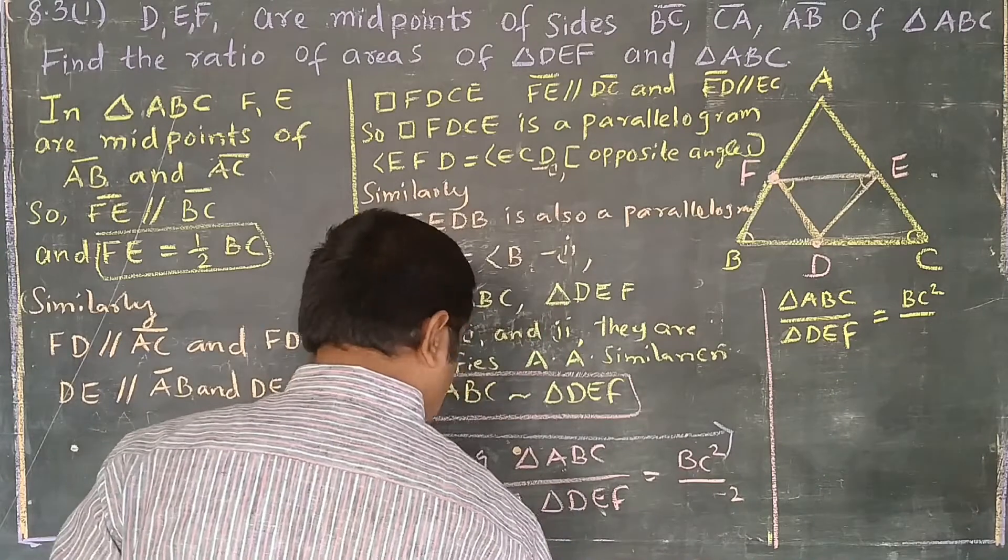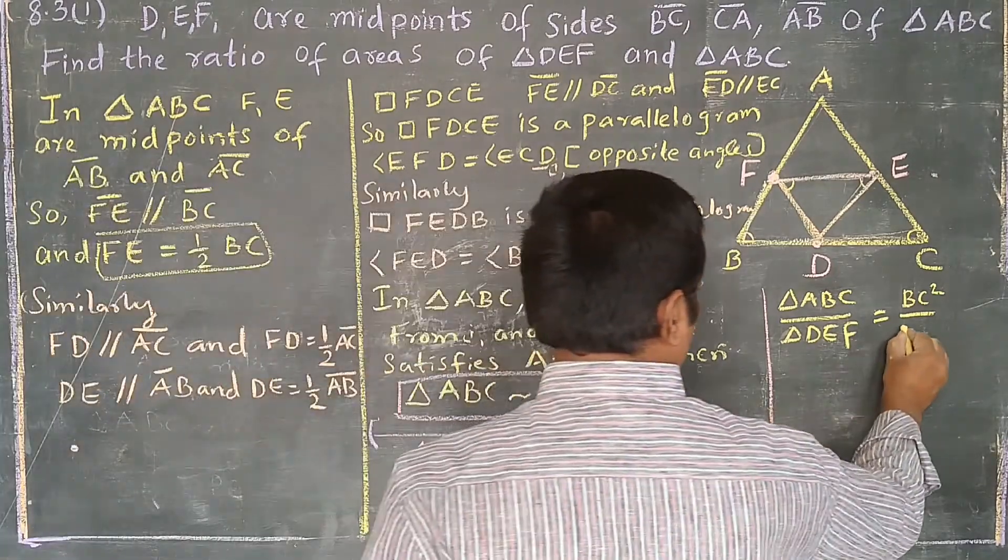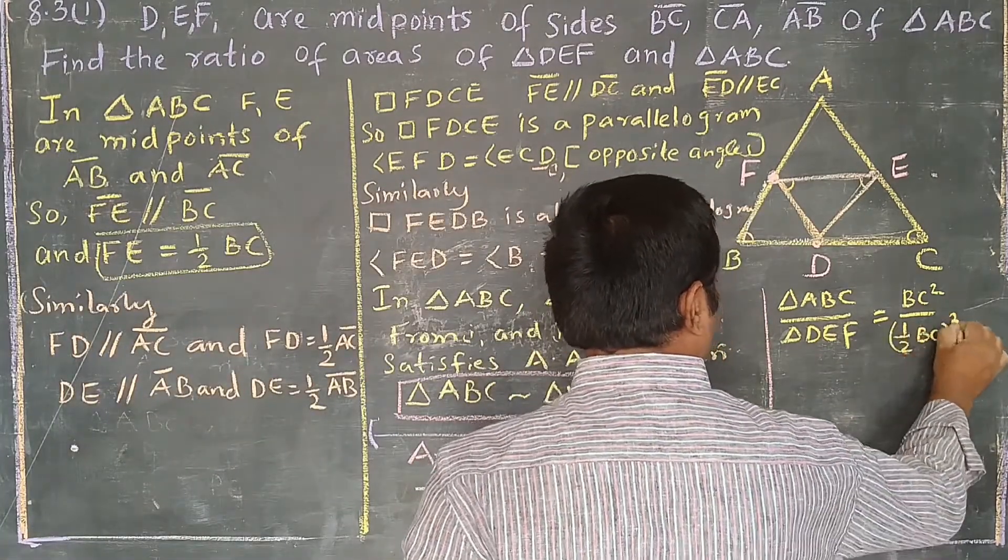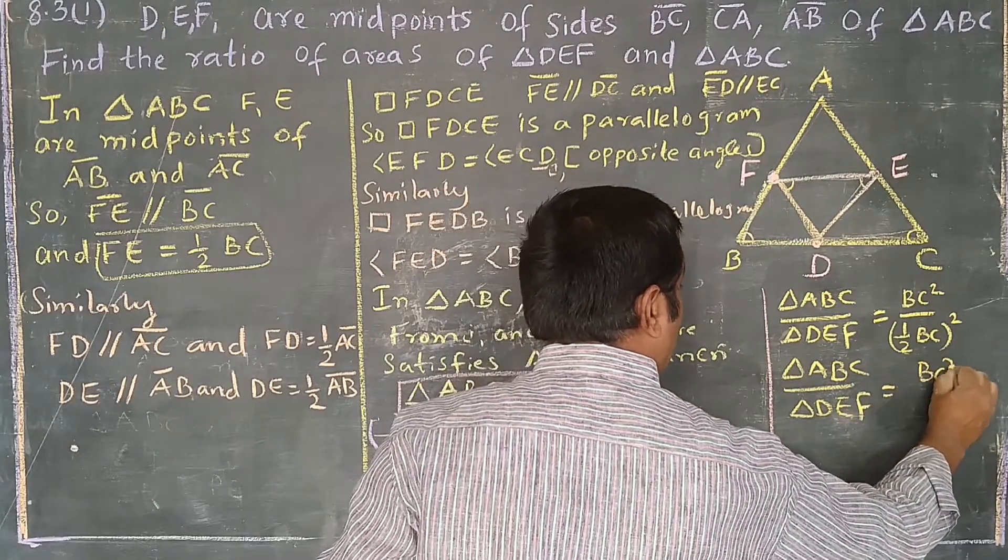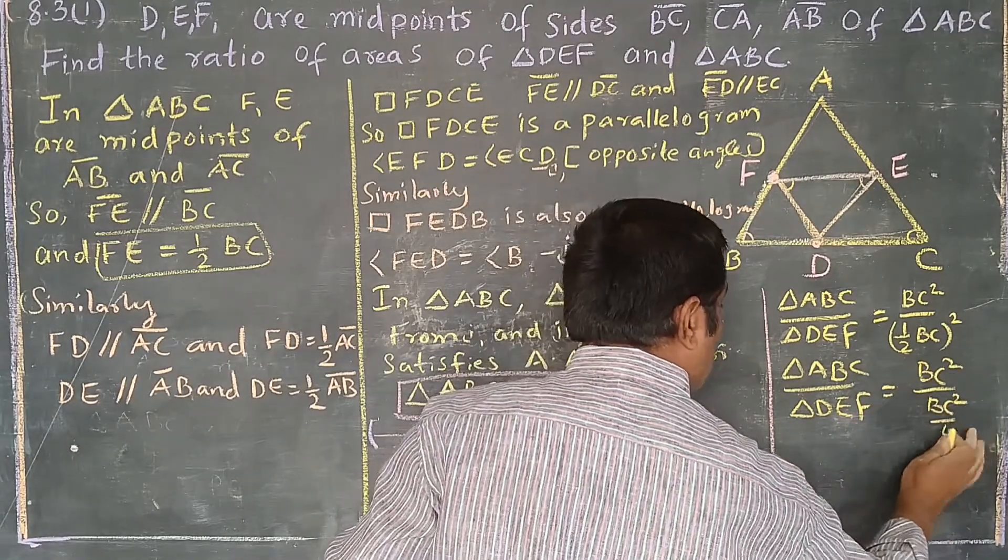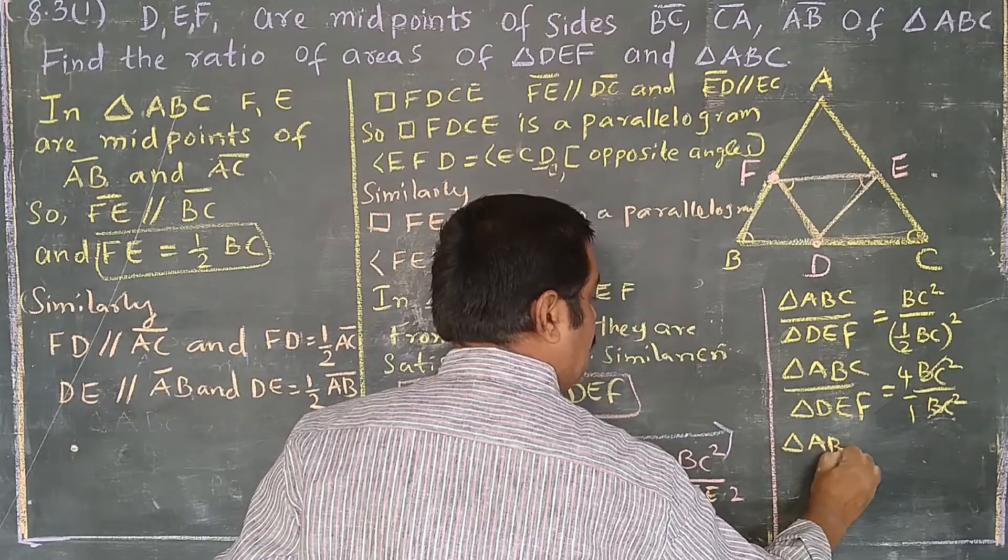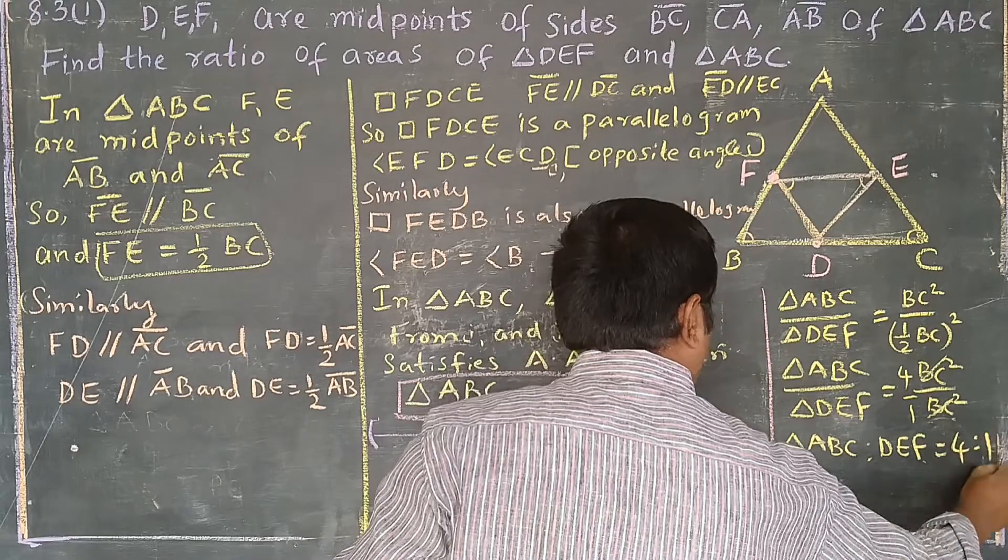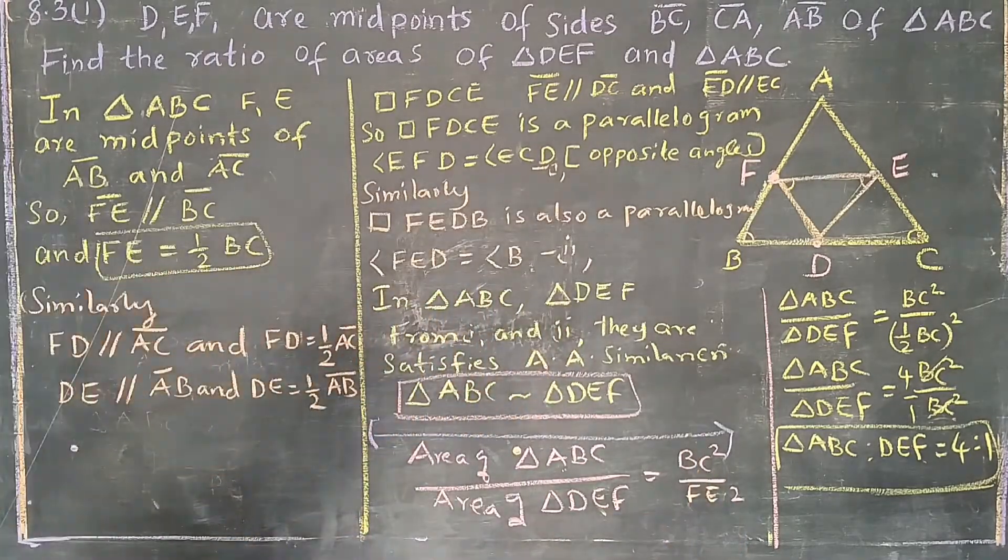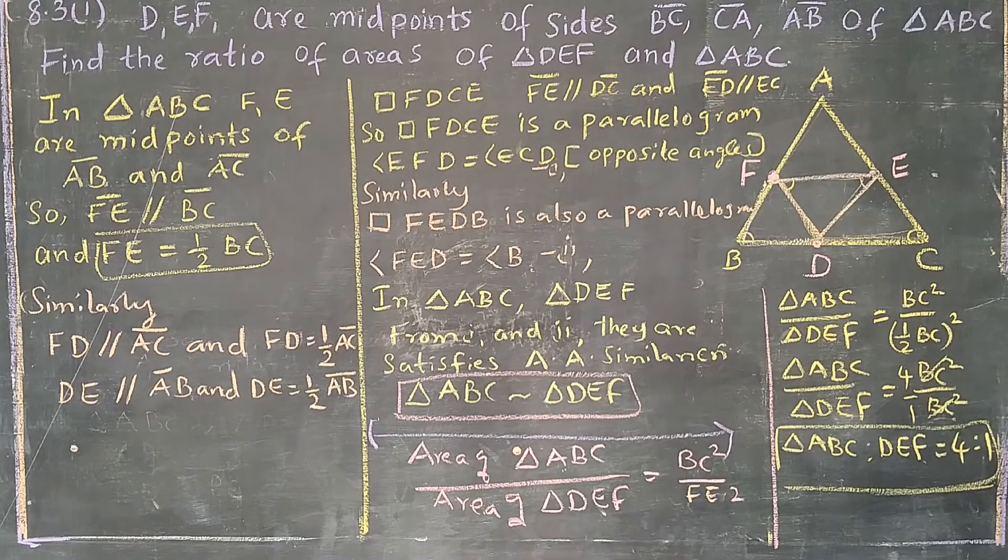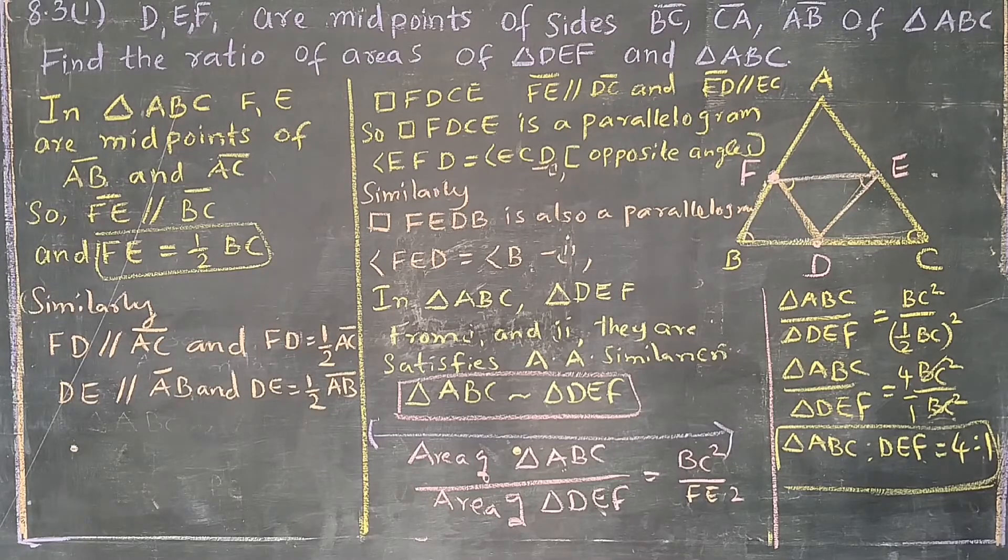Instead of FE you can write half BC. Then what happens? Triangle ABC by triangle DEF is equal to BC square by BC square by 4. That 4 we can write, this square cancels, we get 4 is to 1. So ABC is to DEF is equal to 4 is to 1. Means biggest triangle is 4 portions, the smallest triangle is 1. This is the method to do the problem. Have you understood? Check, note it, and practice. Very easily we can understand. Thank you.